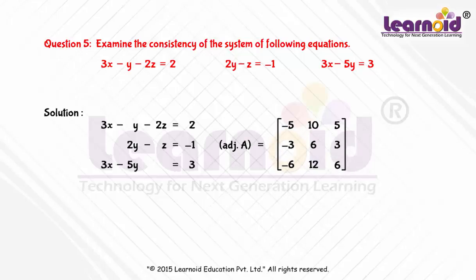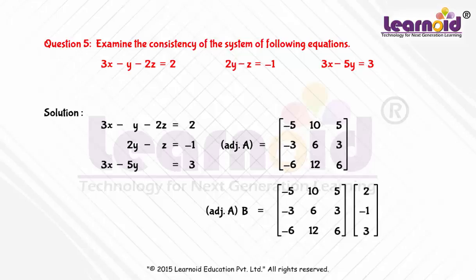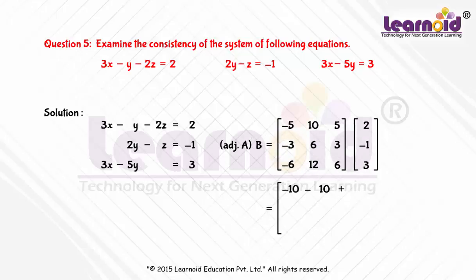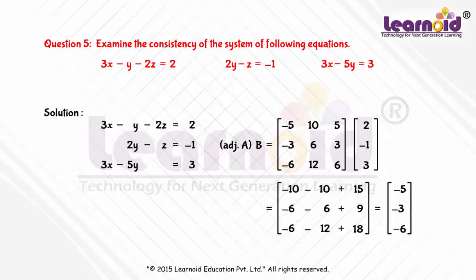Now we find adjoint of A into b. Adjoint of A into b is equal to the matrix [-5, -3, -6], which is not equal to the zero matrix. Hence, the solution of the given system of equations does not exist. The system of equations is inconsistent.